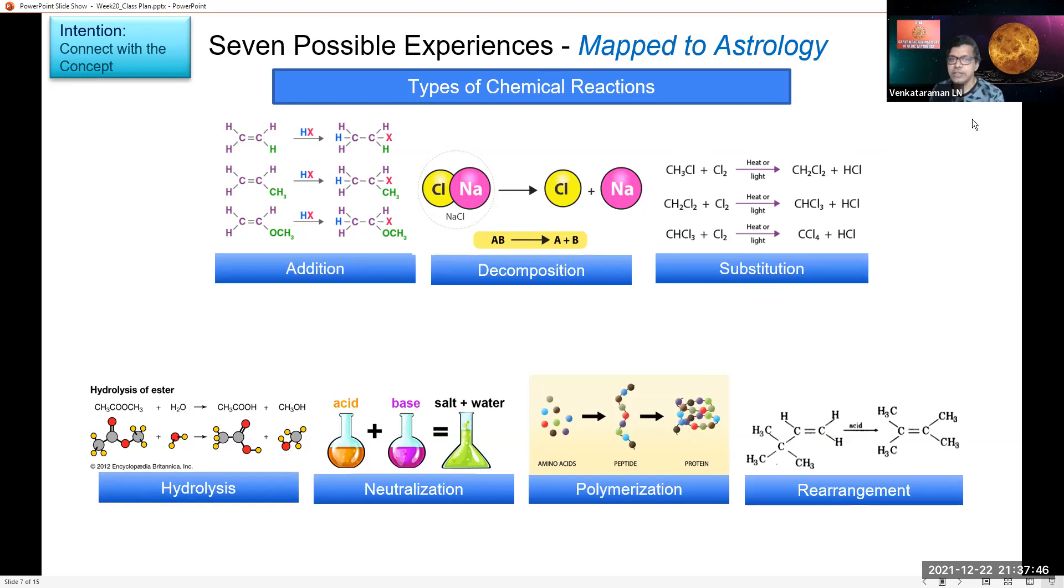Here addition can be linked to a scenario where we have like two planets in the same house which are friends, or Mercury because that's neutral. Two planets who are friendly might give more effect. Both of their effects may be added in the same house. That's one example I'm trying to give.